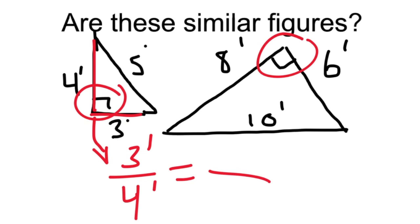Now I want to set that equal here. We got the shortest base of this right angle is six feet and the longer base is eight feet. You need to make sure that when you set up your proportions the sides are corresponding.